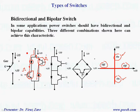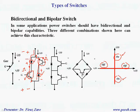If we have positive voltage, in this leg this transistor can block positive voltage, and in this leg this diode can block positive voltage. If we have negative voltage, this diode can block negative voltage and this transistor can block negative voltage. So this configuration can handle both positive and negative voltage.